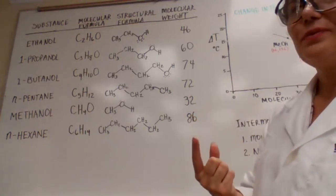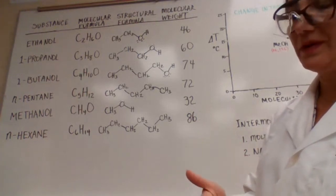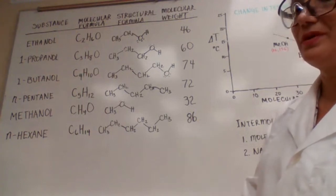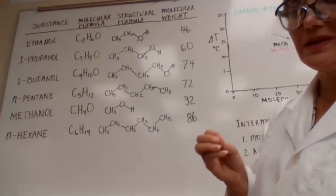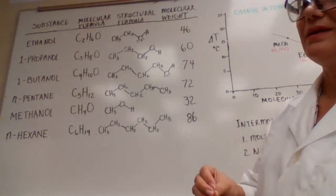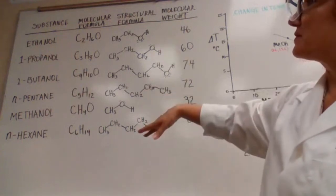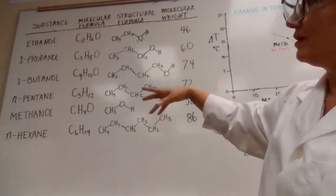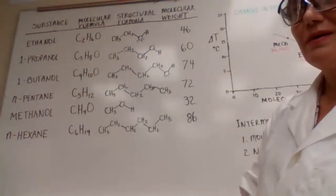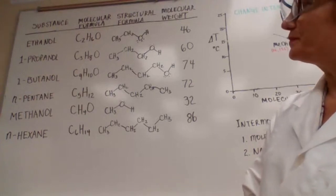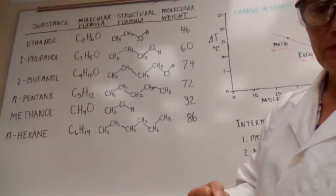There are a couple of factors that affect the rate of evaporation, and we are going to experiment based on one physical property. Experiment 12 is designed to compare the rate of evaporation for six compounds: six tubes, four of which are alcohols and two are alkanes. We are going to find out the trend for rate of evaporation. The first factor is the nature of intermolecular forces.